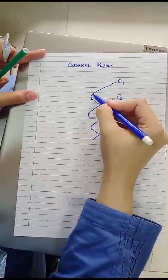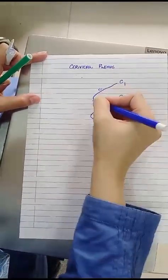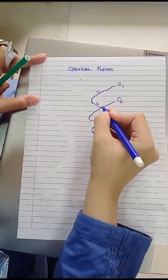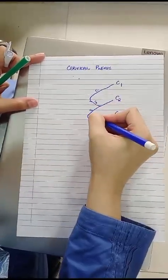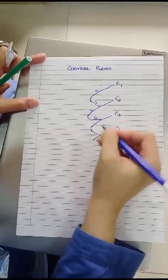So this is the primary loop formed between C1 and C2. This is the primary loop formed between C2 and C3. And this primary loop is formed between C3 and C4.